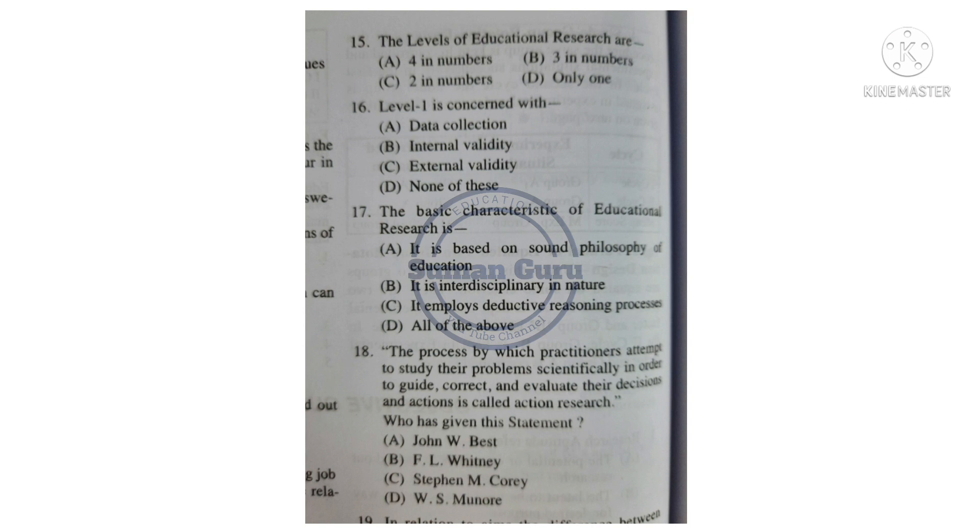Question 15: The levels of educational research are — Option A: Four in numbers. Option B: Three in numbers. Option C: Two in numbers. Option D: Only one. Answer is Option A: Four in numbers.